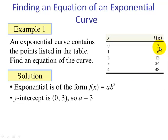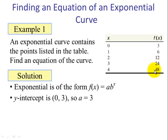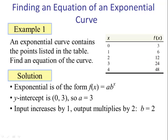Next, to find b, looking at the table, we see as x increases by 1, the value of f(x) is multiplying by 2. It goes from 3 to 6, 6 to 12, 12 to 24, 24 to 48. So b is equal to 2. Putting these two values into the form, we have our function: f(x) = 3 times 2 to the x power.